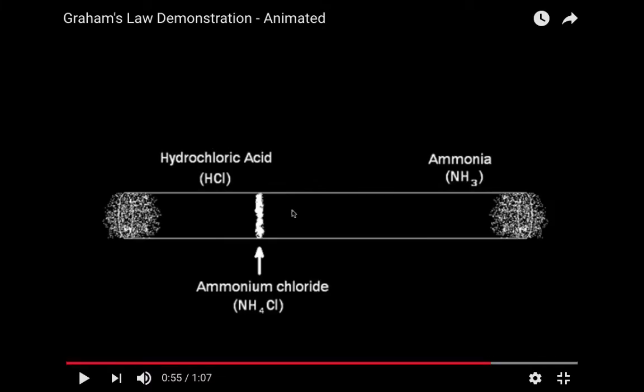Well, notice how it doesn't form in the middle. It forms closer to the HCl. Well, I want you to think about why does it form closer to the HCl. It forms closer to the HCl because the HCl has a higher molar mass, so it's not going to move as fast. The ammonia has a lower molar mass, so it's going to move faster, and so they're actually going to meet further down the tube.